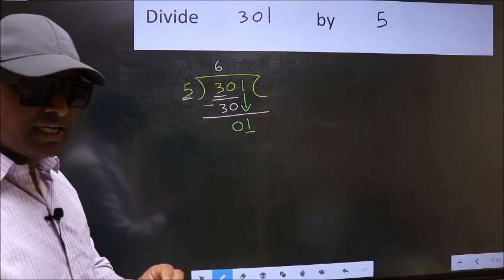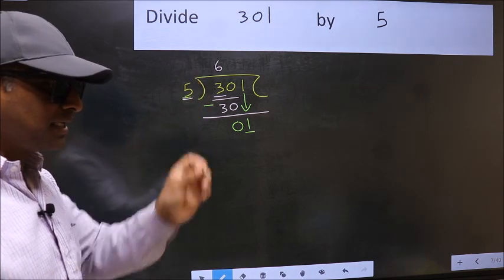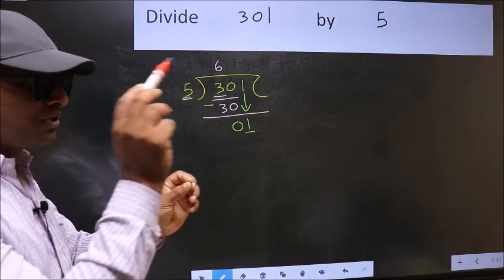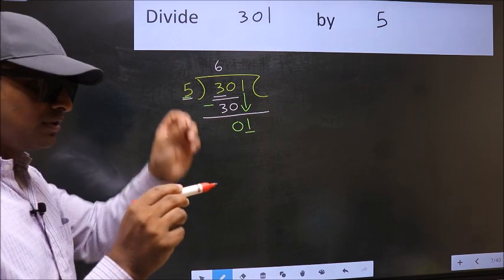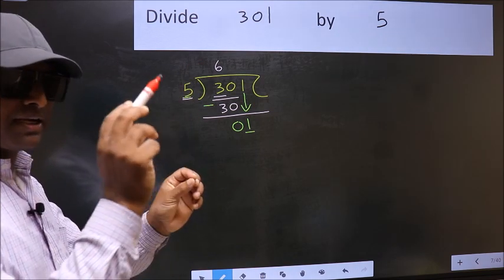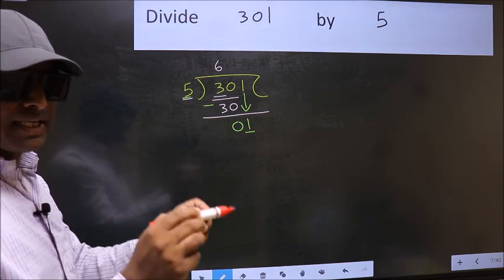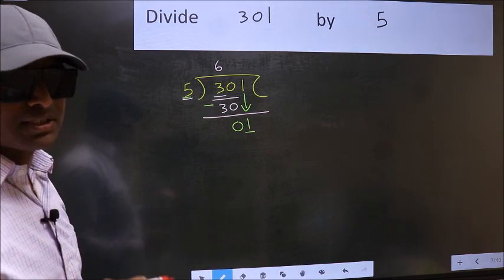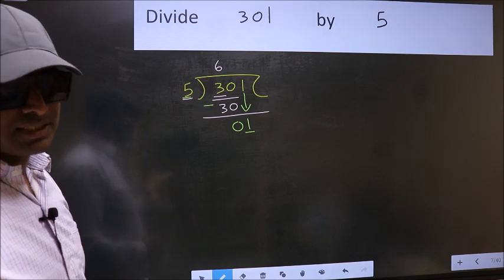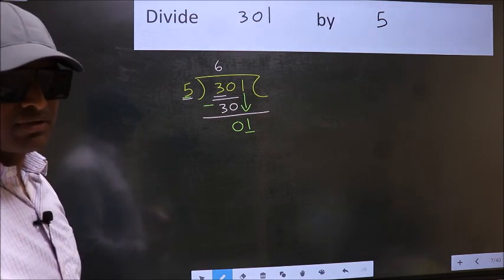I repeat: bringing the number down and putting dot and taking 0, both at the same step, you are not supposed to do. Instead, what you should think of doing is, what number should we write here.